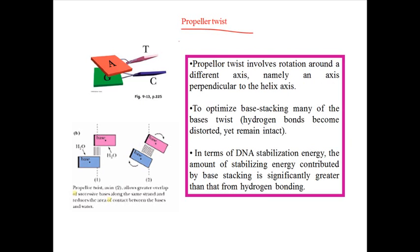In case of propeller twist, this is the rotation of a single base or both of the bases regarding the center of the hydrogen bonding - regarding the hydrogen bonding axis. That's the important difference between propeller twist and the normal twist.